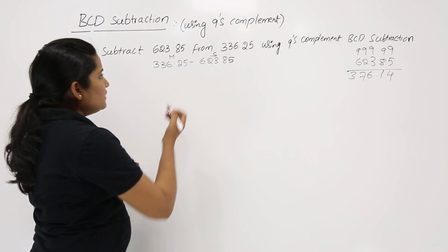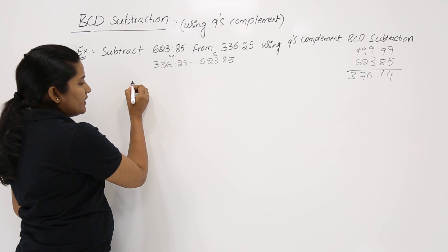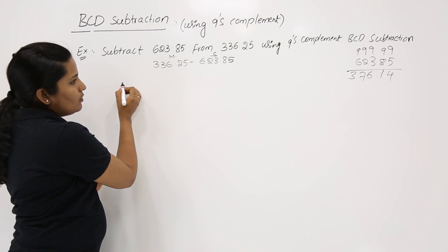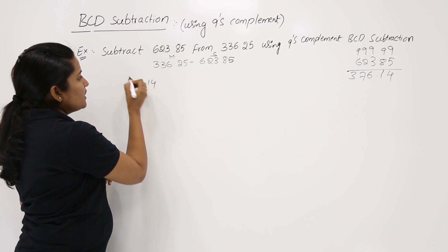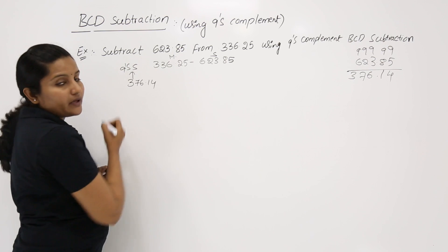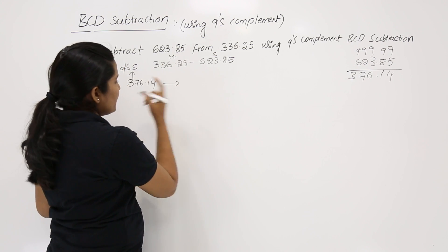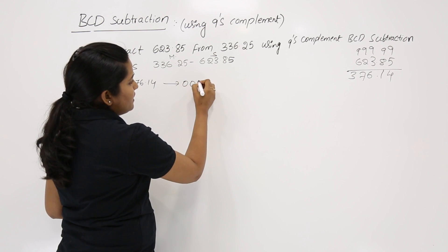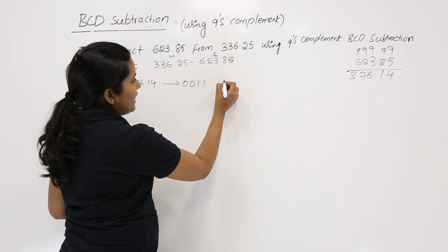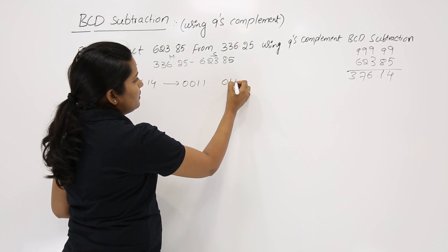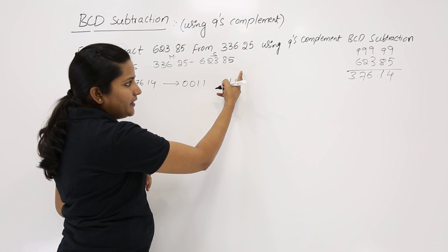We now take the BCD code for 376.14, which is the 9's complement of the subtrahend. For 3: 0011; for 7: 0111; for 6: 0110. If you have any doubt, take 8421 as a reference and compare the bit weights.